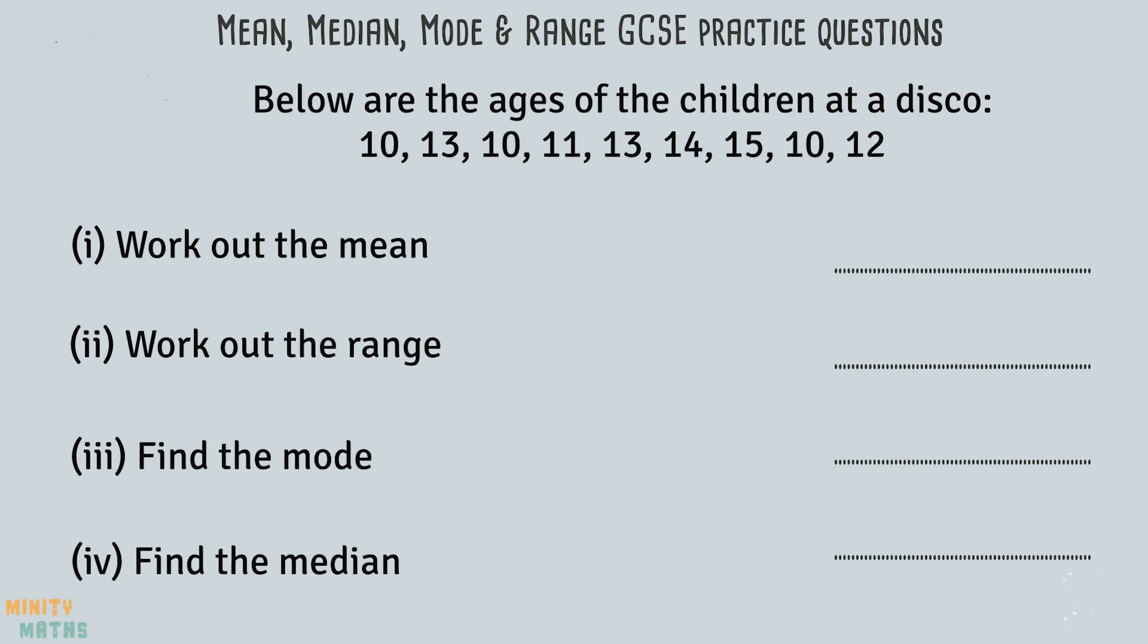Let's look at a typical GCSE style question. We are given the ages of a group of children and asked to find the mean, median, mode and range of these ages. For part 1, we need to find the mean. To do this we add up all of the ages and divide by the number of children. We have 9 different ages here, so there are 9 children. If we divide 108 by 9, we get a mean age of 12.